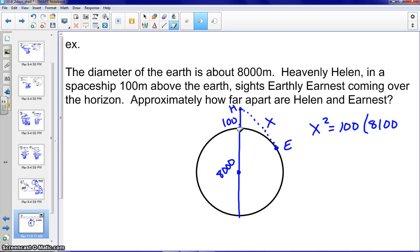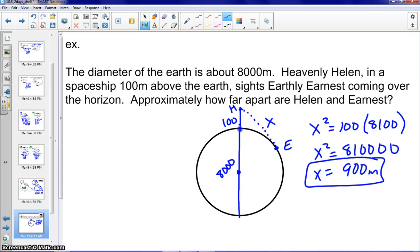times whole. Pardon me, that would be, yes, 8,100. And go ahead and multiply. And when we take the square root of that, we would actually get plus or minus 900. However, we cannot have a negative distance between Helen and Ernest, so that would just be the positive 900 meters.